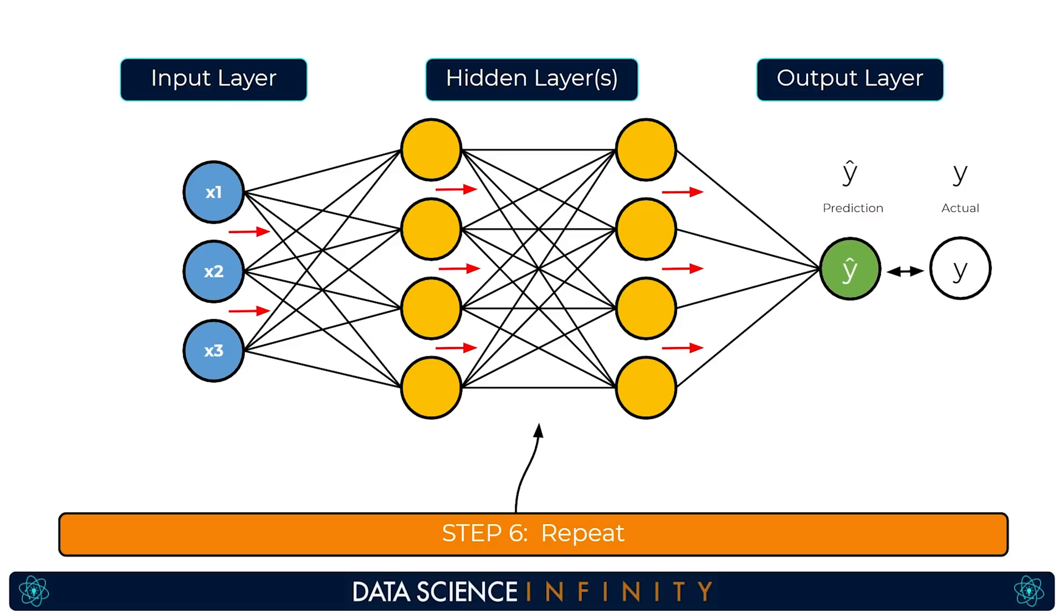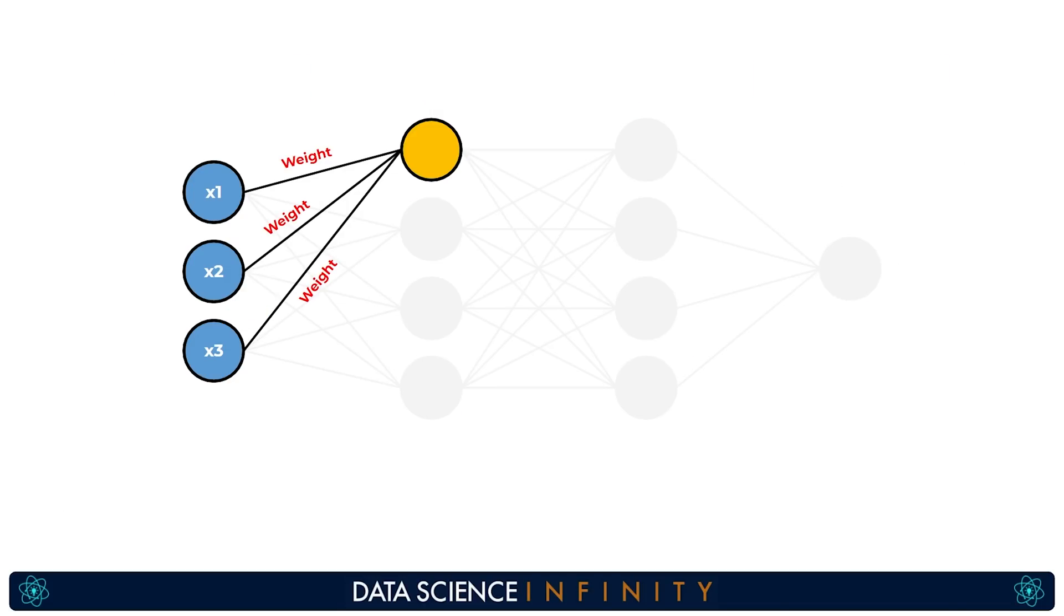Right so now we've got this process fresh in our mind let's talk in more detail about these weighting values that are not only an important part of the process of passing information forward from the neurons in one layer to the neurons in a subsequent layer but are also what the network looks to alter over time as it learns how to map the importance of each input to the correct output values or classes.